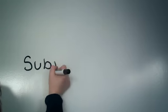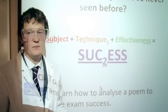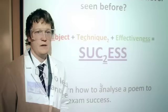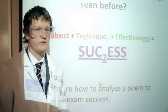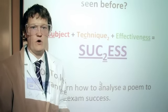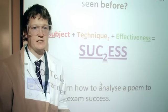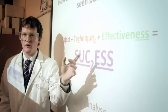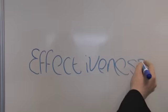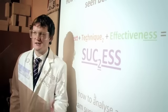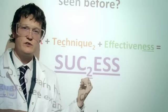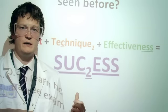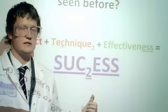Subject — what's the poem about? Plus technique. You need to talk about all those things: first person, writing, alliteration, all that stuff. You need to comment on their effectiveness. What is this poet trying to do? You add all three elements together and you combine them to make success.